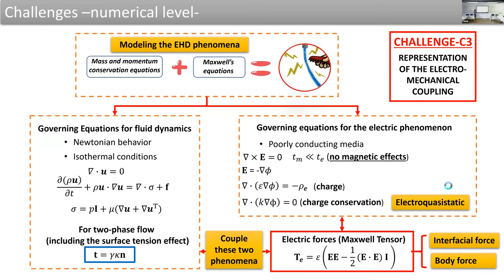To model the electrohydrodynamics phenomena and droplet deformation, we employ the mass and momentum conservation equations and Maxwell's equations. Assuming Newtonian fluids under certain conditions, the mass and momentum equations can be reduced to the incompressible Navier-Stokes equations. It is very important to introduce the surface tension effect due to the small scale we are working at — surface tension is one of the dominant forces in this problem.